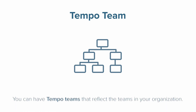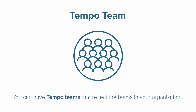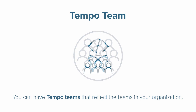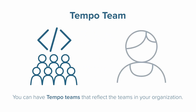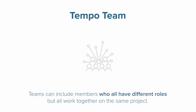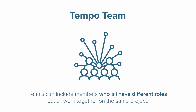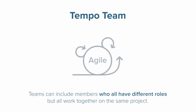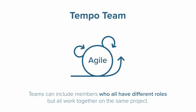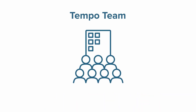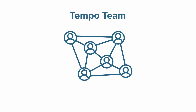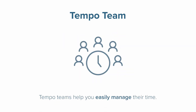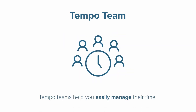For example, you can have Tempo teams that reflect the teams in your organization, such as a group of developers who all report to the same manager. Or teams can include members who all have different roles but all work together on the same project, such as in an agile work environment. Whether you're managing your own staff, a dedicated team, or a cross-functional team, Tempo teams help you easily manage their time.